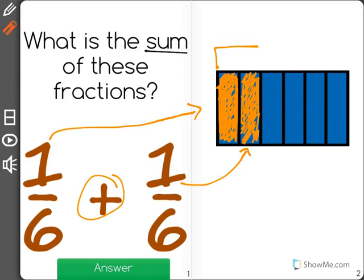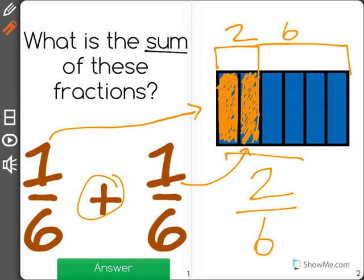It wants to know the sum or the total. I can see that I have 2 equal pieces shaded out of the 6 total, meaning that 2 parts out of the 6 whole, the sum is 2/6.